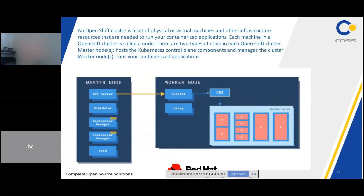In OpenShift, there are two types of nodes: master node (also called control plane node) and worker node (also called compute node). An OpenShift cluster is made of master and node hosts. Master hosts form the control plane that monitors and reacts to changes in the cluster. Worker nodes, also known as compute nodes, run the user's containerized applications. Master nodes host the Kubernetes control plane components to manage the cluster.